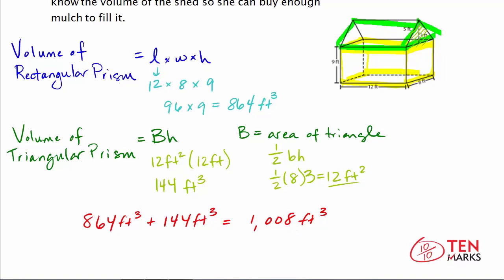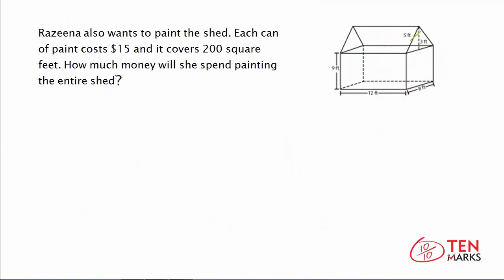Let's try another problem. Rosina also wants to paint the shed. Each can of paint costs $15 and covers 200 square feet. How much money will she spend painting the entire shed, including the roof and the door? Since the paint goes on the surface of the walls, we need to find the surface area. We still have a composite shape — a triangular prism on top and a rectangular prism on the bottom — so we'll find the surface areas separately and then combine them.